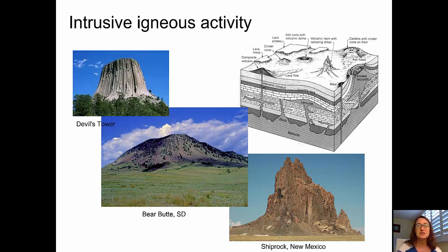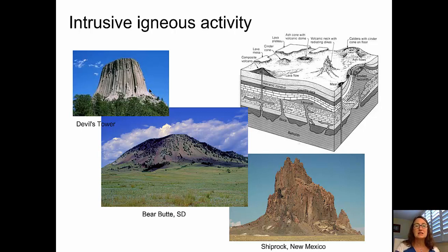And finally, Devil's Tower — you may recognize it from a famous movie. Devil's Tower is made up of a sequence of columnar-jointed basalts: basalts that cooled and crystallized near the surface of the Earth and, as they cooled, contracted, giving them their typical six-sided column formation.